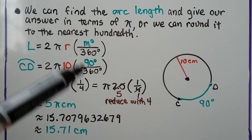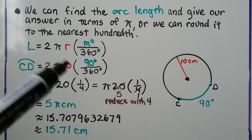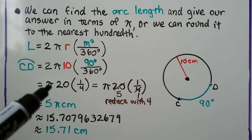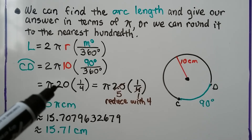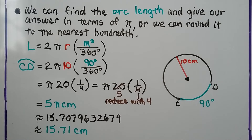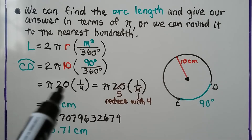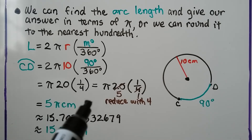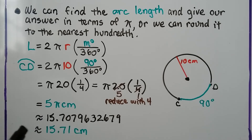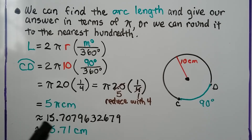Well, 90 over 360 is one-fourth. So we do 2 times 10 — we have π and 20 — and we're going to multiply it by one-fourth. We can reduce 20 with 4, and we get 5π centimeters. To answer it to the nearest hundredth, we multiply 5 times π and get this long decimal that we round to 15.71 centimeters. So that's the length of our arc.